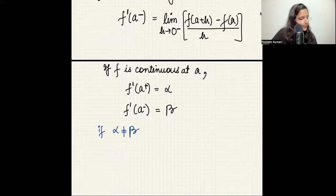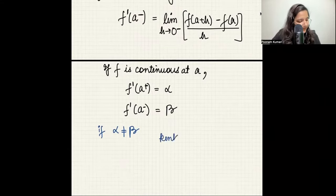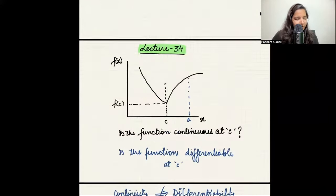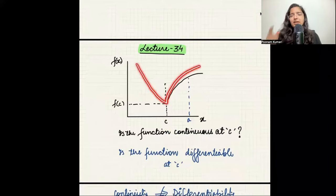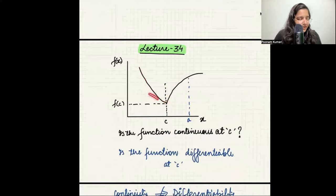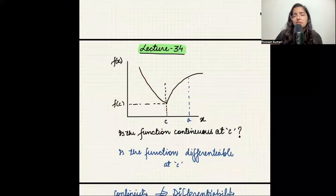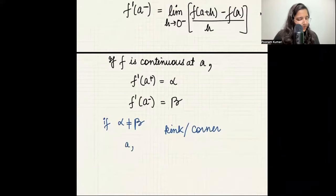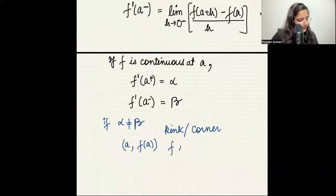If alpha ≠ beta, the function is not differentiable at point a. The function will have a kink or corner at that point — it is suddenly changing its shape. In our example, the function came in a certain way and then changed shape, creating a corner or edge. The tangent from the left and the tangent from the right are different, so the two limits are different, and the function is not differentiable.